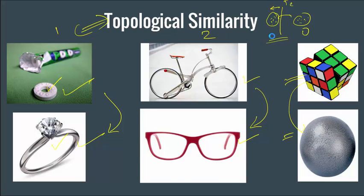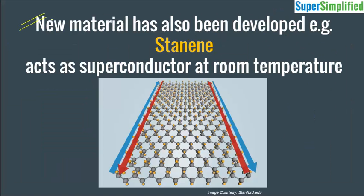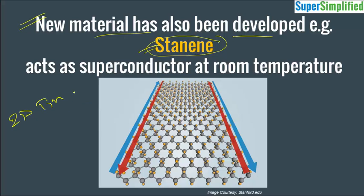So I hope you understood this. Now what is the practical significance? A lot of new materials have been synthesized based on this principle. One of them is known as stannine — this is nothing but two-dimensional tin, which has a hexagonal arrangement of particles inside.